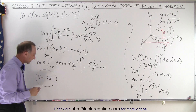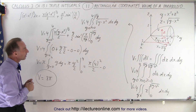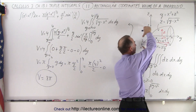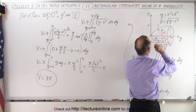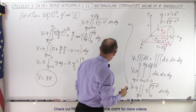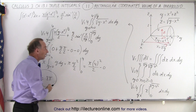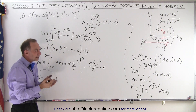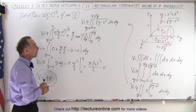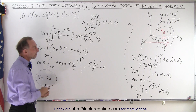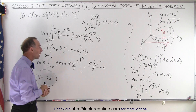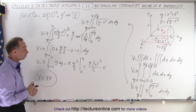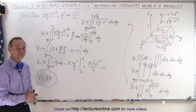Notice that 8π is exactly half of what we got in the previous video, where we had a cylinder of length four. This means the volume of this paraboloid is half the volume of the cylinder that would encapsulate it, which seems reasonably close to what you would expect. So 8π is either the exact answer or very close to it, and that is how it's done.